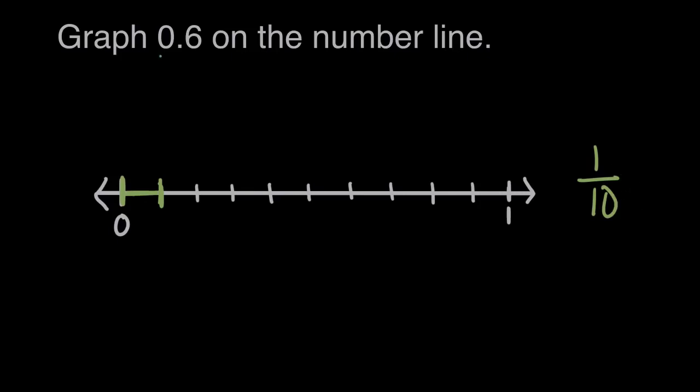Now the number we're supposed to graph is 0.6. Well this six is in the tenths place value. So another way we could read this decimal is six-tenths, or as the fraction, six-tenths.